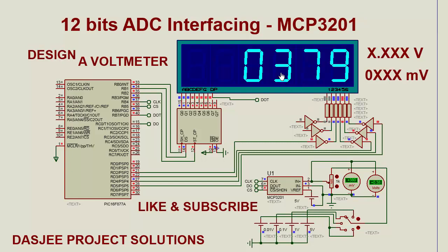This is very accurate. Now we decrease the voltage again — this is 38 millivolts, and the result on the seven-segment is 37 millivolts. At 3.8 millivolts actual voltage, the result on the seven-segment is 3 millivolts. This is the 12-bit ADC.